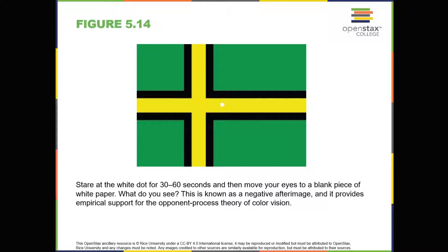To experience this slightly different view, do this simple exercise. Extend your arm fully and extend one of your fingers and focus on that finger. Now close your left eye without moving your head. Then open your left eye and close your right eye without moving your head. You'll notice that the finger seems to shift as you alternate between the two eyes because of the slightly different view each eye has of your finger. A 3D movie works on the same principle. The special glasses you wear allow the two slightly different images projected onto the screen to be seen separately by your left and your right eye. As your brain processes these images, you have the illusion that the leaping animal or running person is coming right towards you.